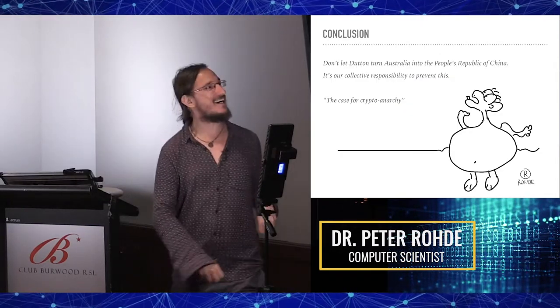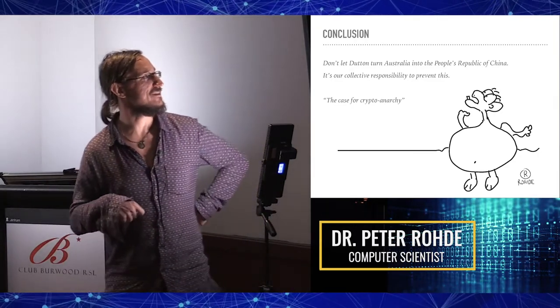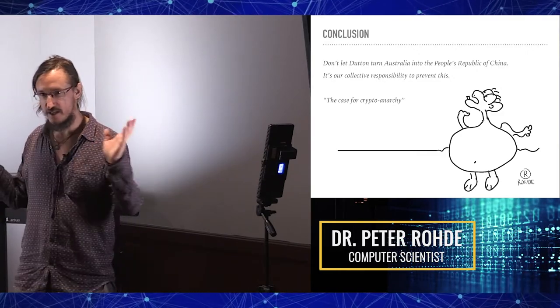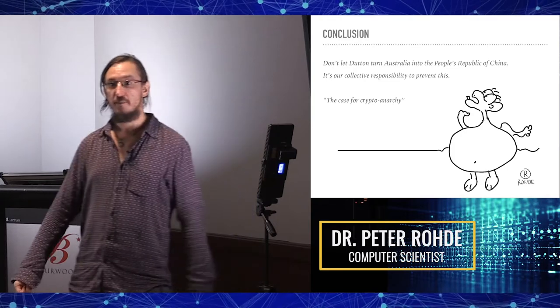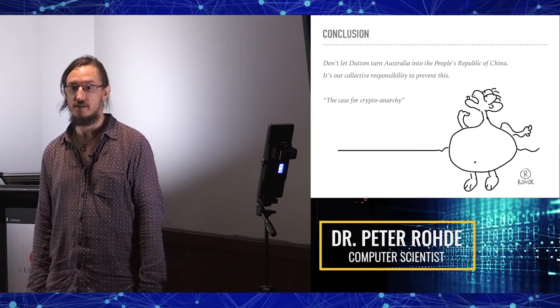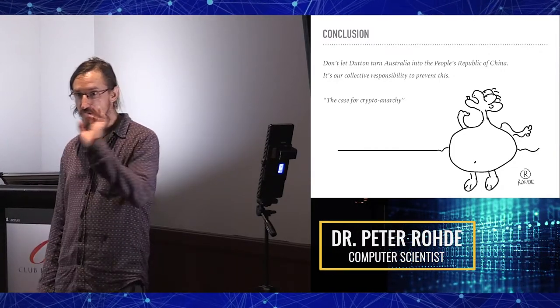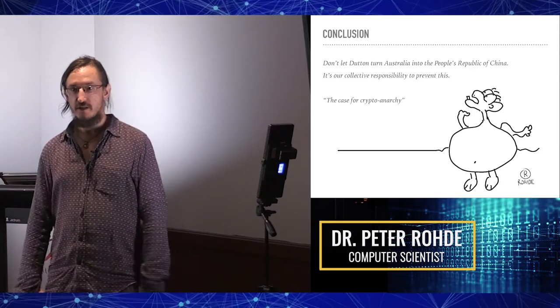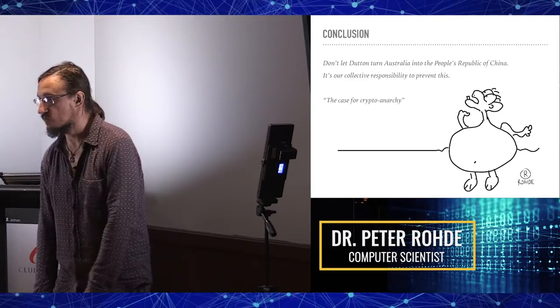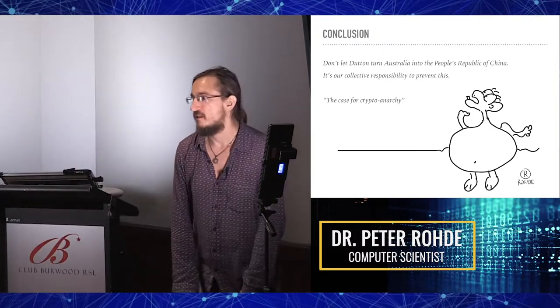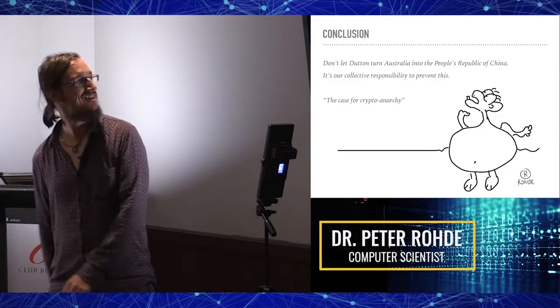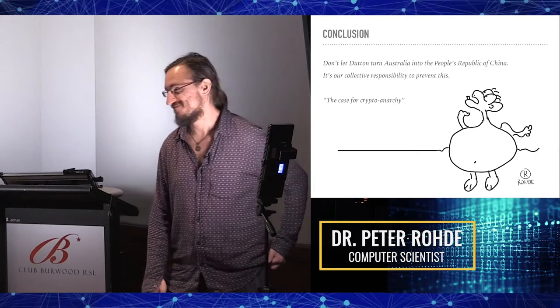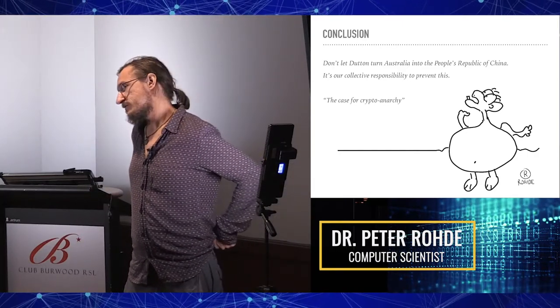In conclusion, don't let Dutton turn Australia into the People's Republic of China, because that's our collective responsibility to do so. That's my case for what we call crypto-anarchy. I don't identify as an anarchist in the real world, but in the digital world I believe that we have irrefutable rights to pursue these technologies and to use them at will. Because at the end of the day, the justifications for not doing so are never used for what they said they are, which is terrorists and pedophiles. It's targeted at the masses so that ultimately it can be used against you, which is already affecting one-fifth of the world population. It's not a hypothetical scenario at all.